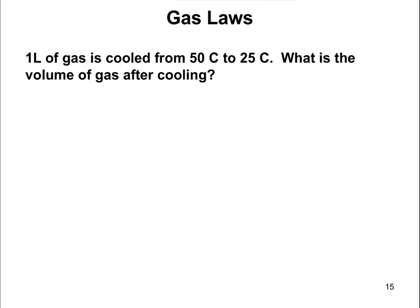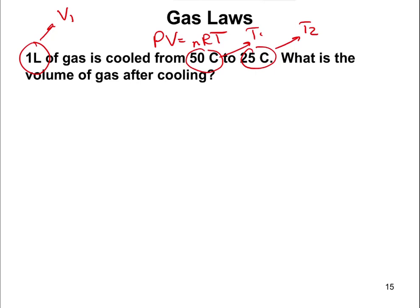Here's another problem: one liter of gas is cooled from 50 degrees Celsius to 25 degrees Celsius. What is the volume of the gas after cooling? Starting with PV equals nRT, we identify V1 as 1 liter, T1 as 50 degrees Celsius, and T2 as 25 degrees Celsius. We're solving for V2, the final volume.